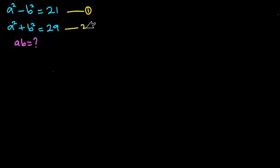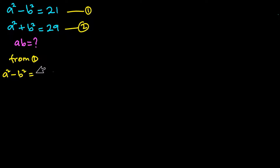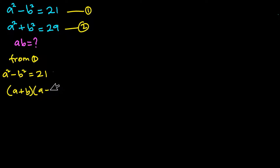First of all I will name the first equation as equation one, and this second equation as equation two. From equation one, which is a squared minus b squared equals 21, let's consider the left hand side first. A squared minus b squared is the difference of two squares, so I can write this as a plus b times a minus b, and this is equal to 21.